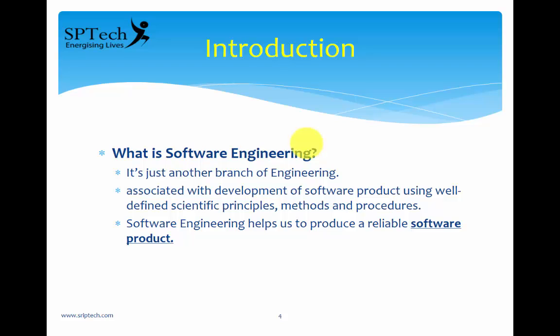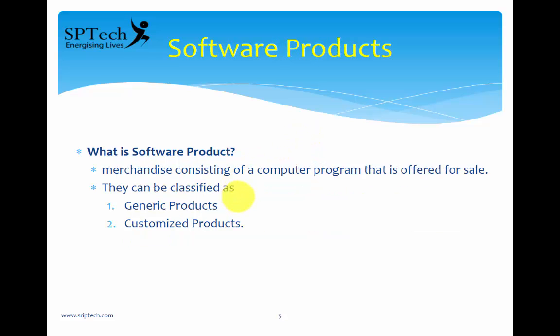The person involved in software engineering is called a software engineer. A software engineer basically develops new products. The main idea of software engineering is to bring new products to the market. You can classify the products into two types. A software product is a computer program or computer application which you can install on your computer and start working with. MS Office is an example of a software product, or Tally installed on your computer — that's also an example of a software product.